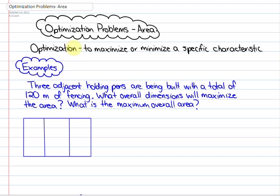Optimization is to maximize or minimize a specific characteristic. In this particular case we're going to be looking at how to optimize area or to be more specific to maximize the area given certain constraints.